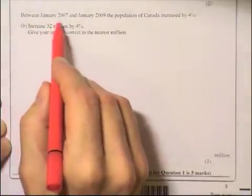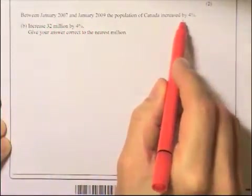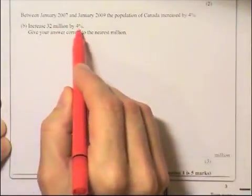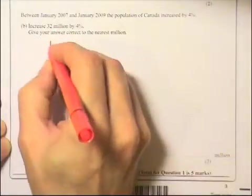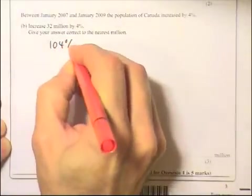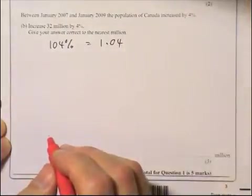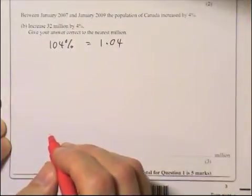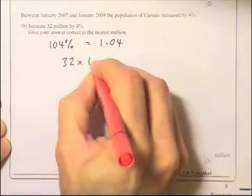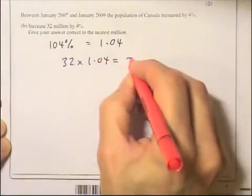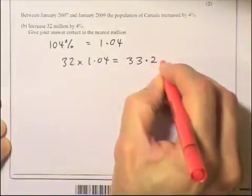Between January 2007 and January 2009, the population of Canada increased by 4%. Increase 32 million by 4%. If we're increasing by 4%, we then have 104%. And that as a decimal is 1.04. Much easier to work with decimals. So I'm increasing 32 million by 1.04, so that's going to be 32 times 1.04.